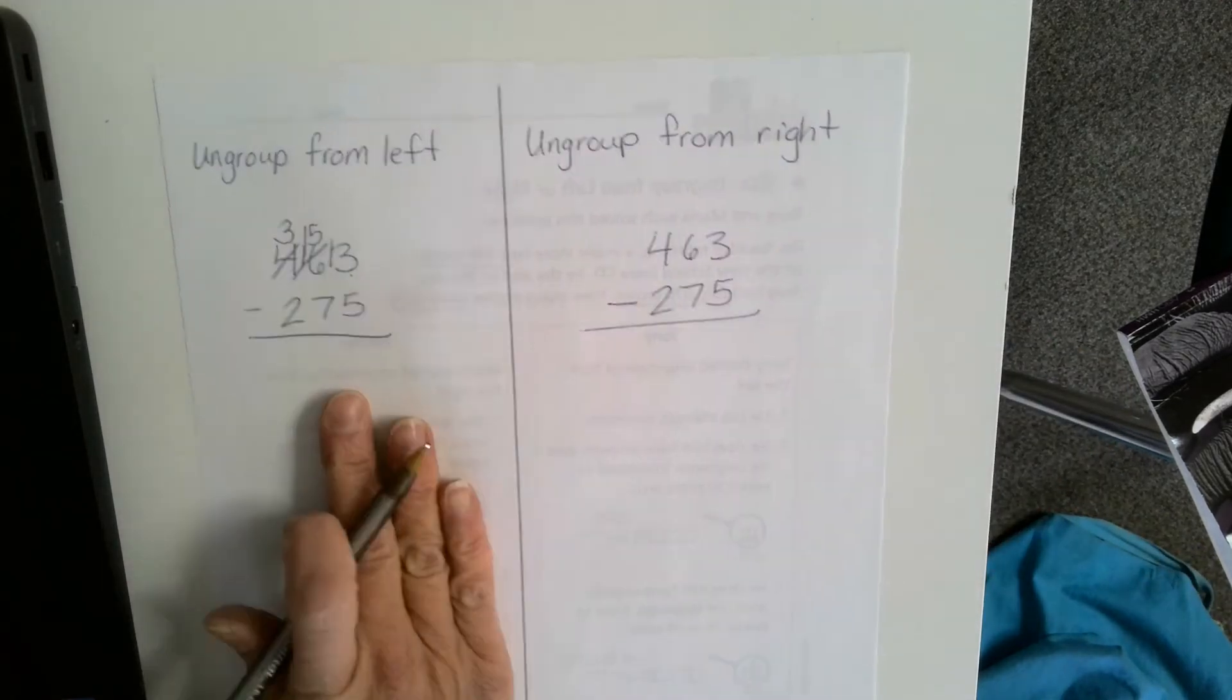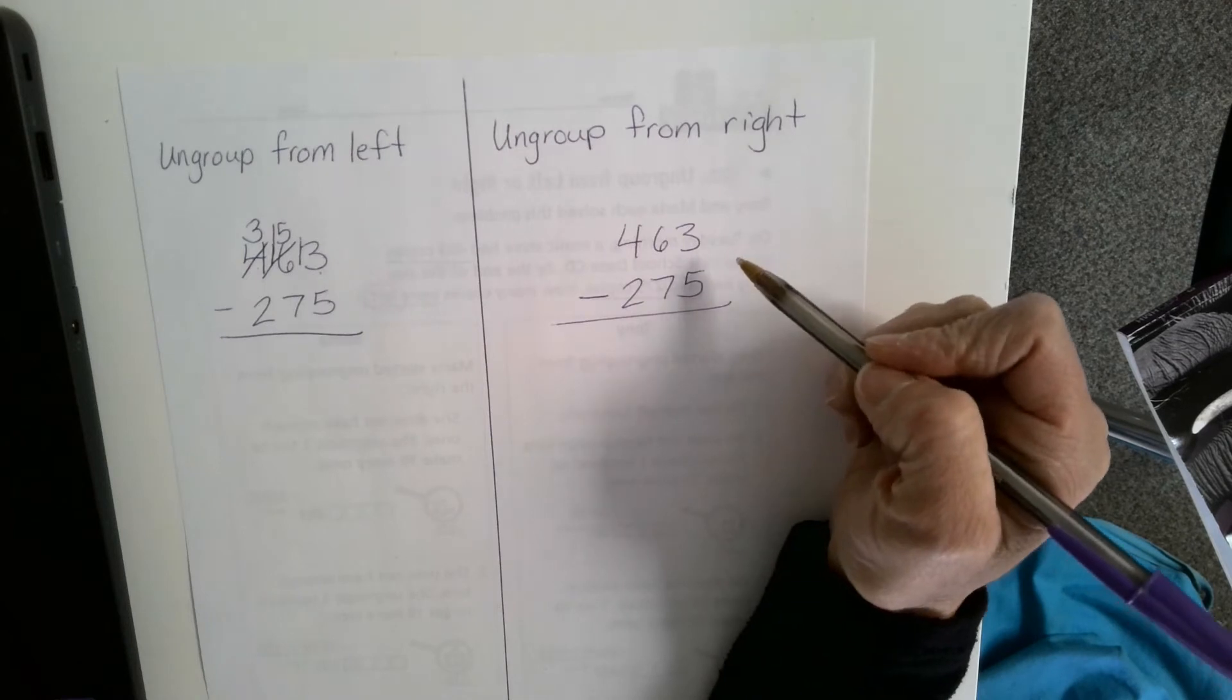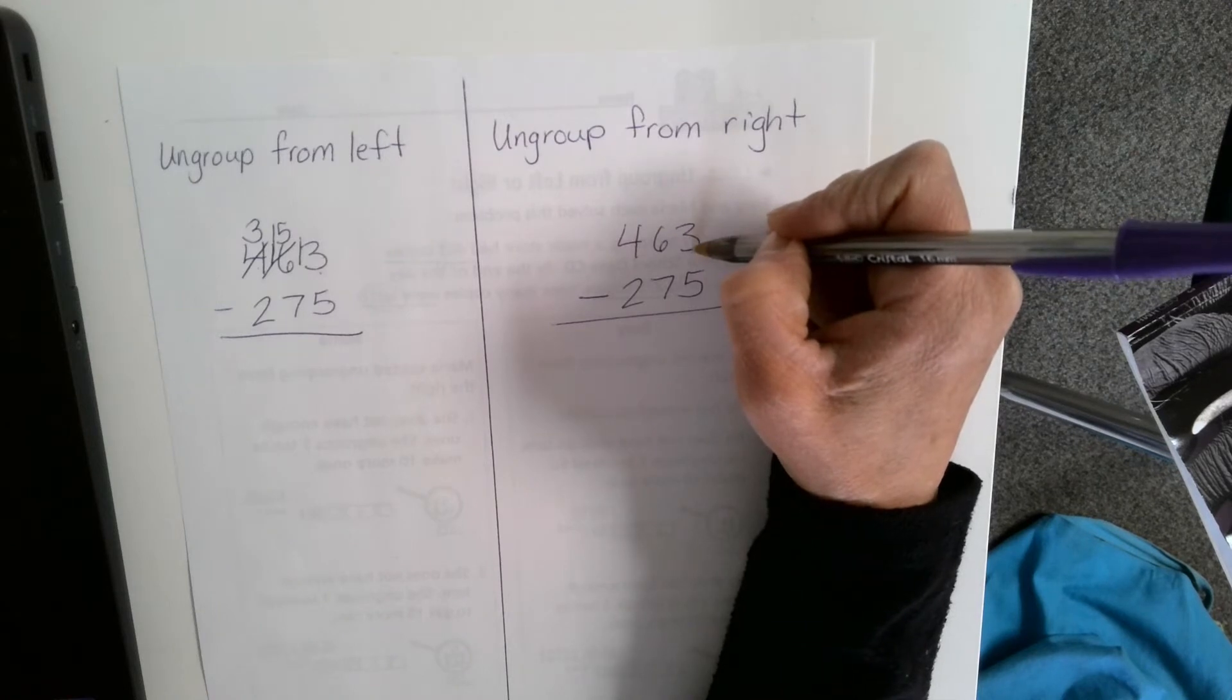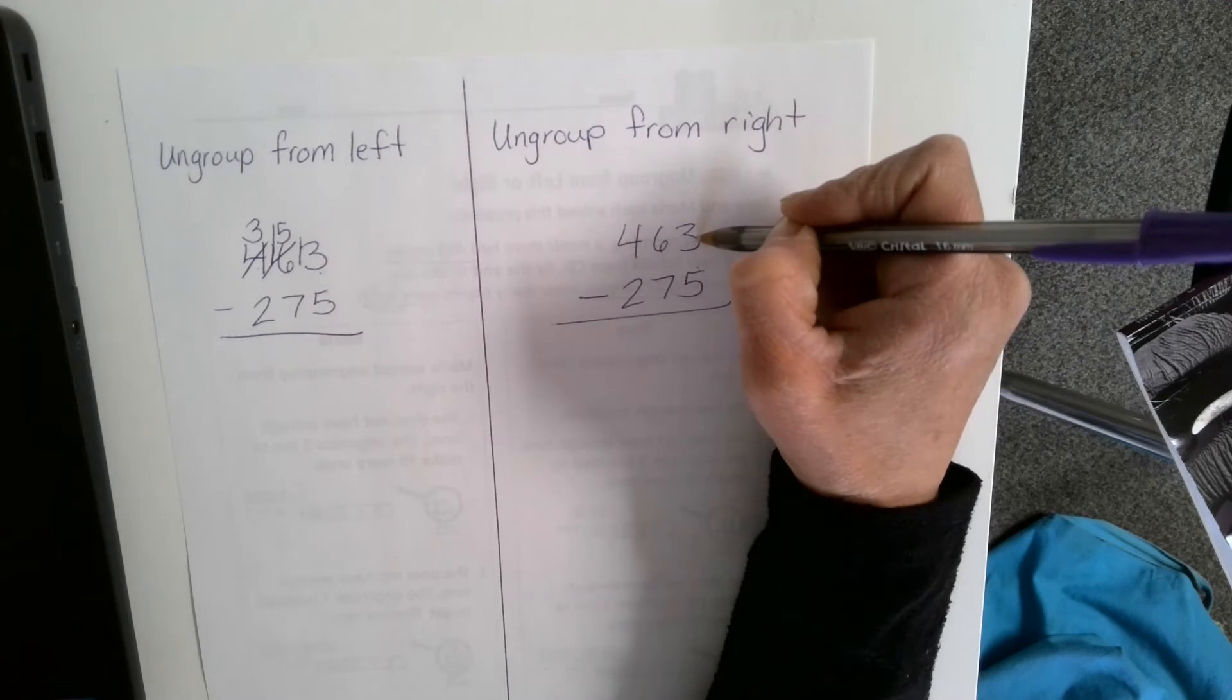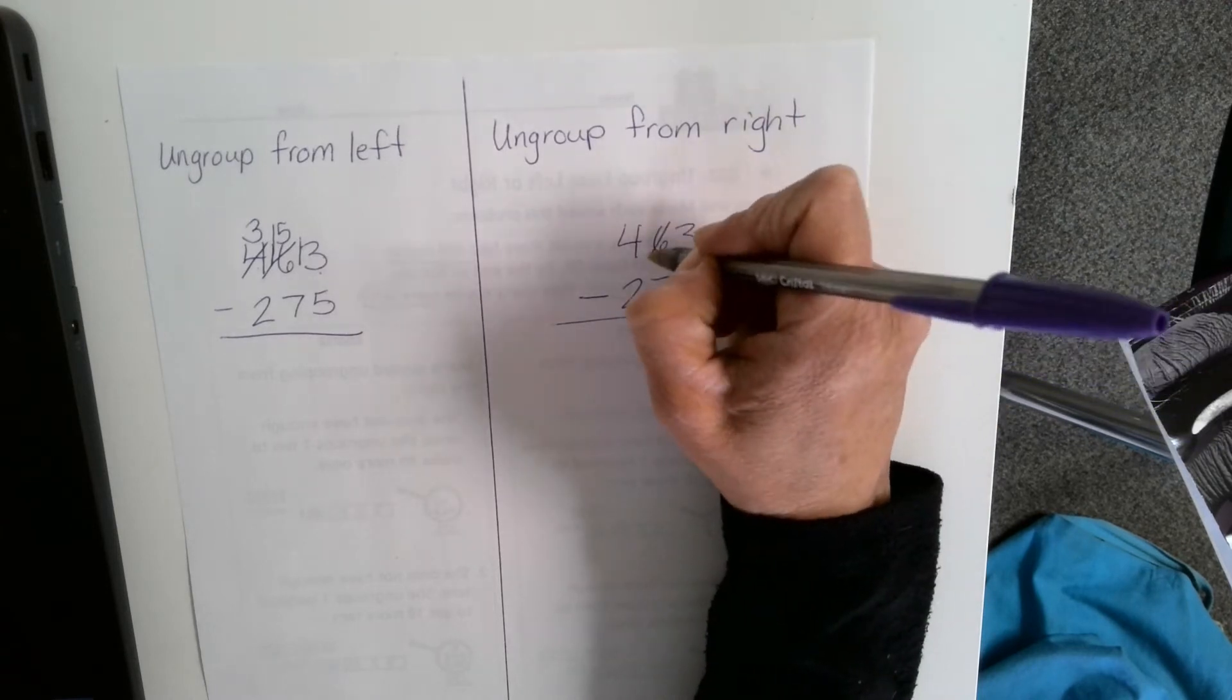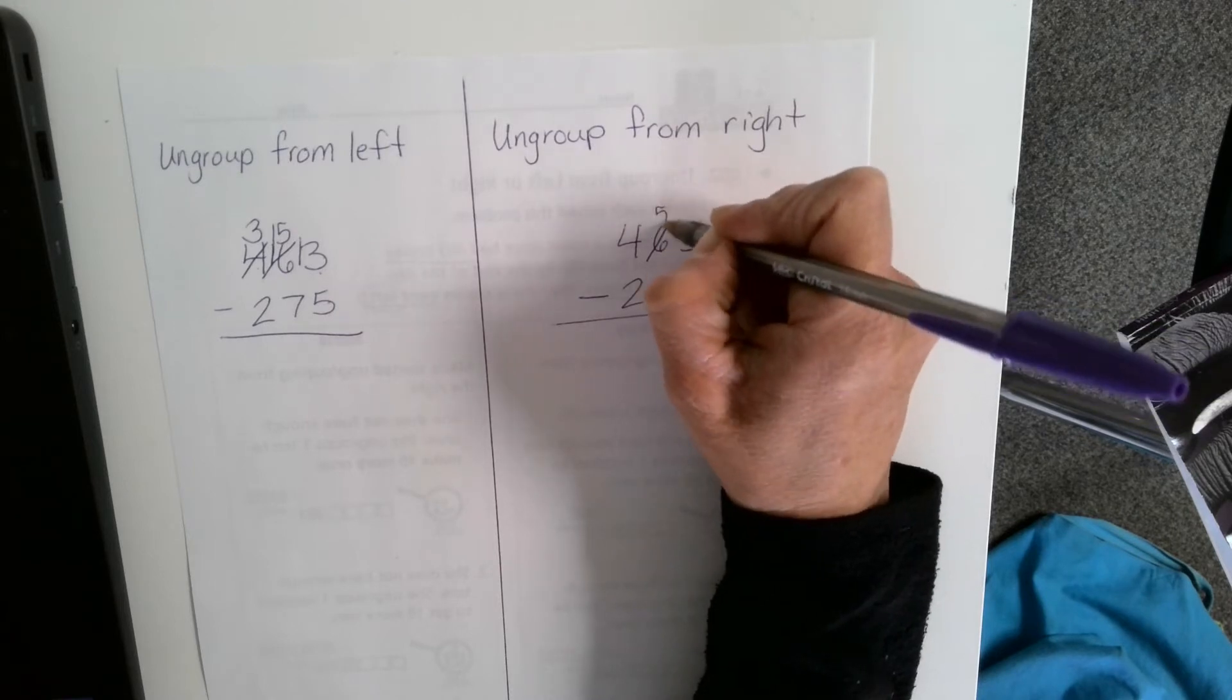If I were going to do the same thing but start on the right, I want you to see how they're similar and different. If I start on the ones place, I'm still looking to see, can I do 3 minus 5? When the number on top is smaller than the number below it, you cannot do it. I'm going to take a new group from the tens place, which if I take one away from 6, that leaves me with 5.